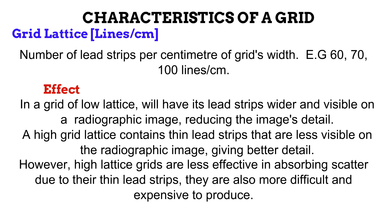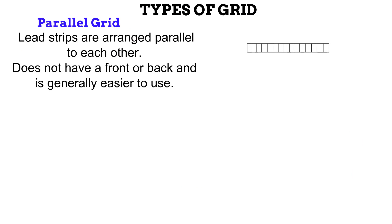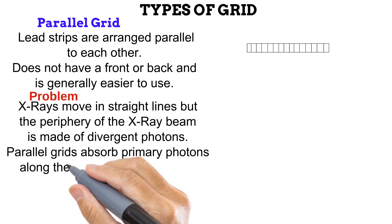Now let us look at the types of grids. The first is the parallel grid. In this configuration, the lead strips are arranged side by side, parallel to each other. Because of this arrangement, this type of grid does not have a front or back — either side can be placed on the image receptor, making it much easier to use, as an upside-down placement error cannot occur. However, the parallel grid tends to absorb some primary photons — the ones at the peripheral edges of the X-ray beam.